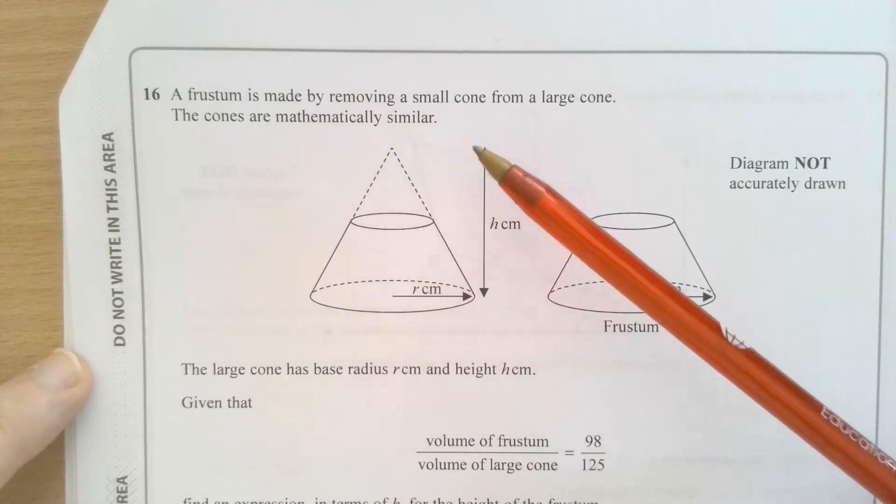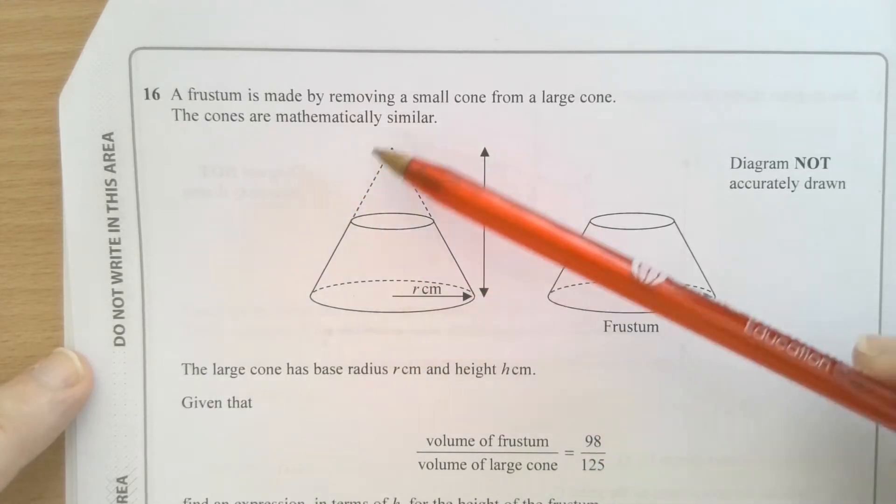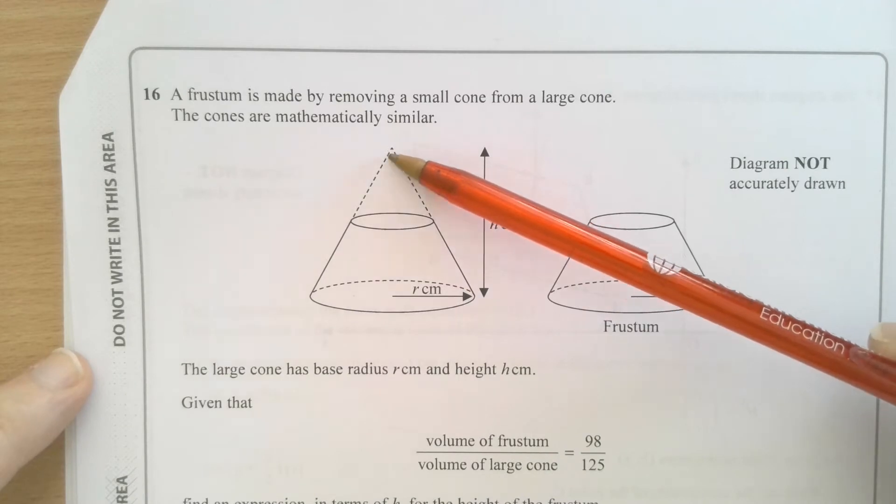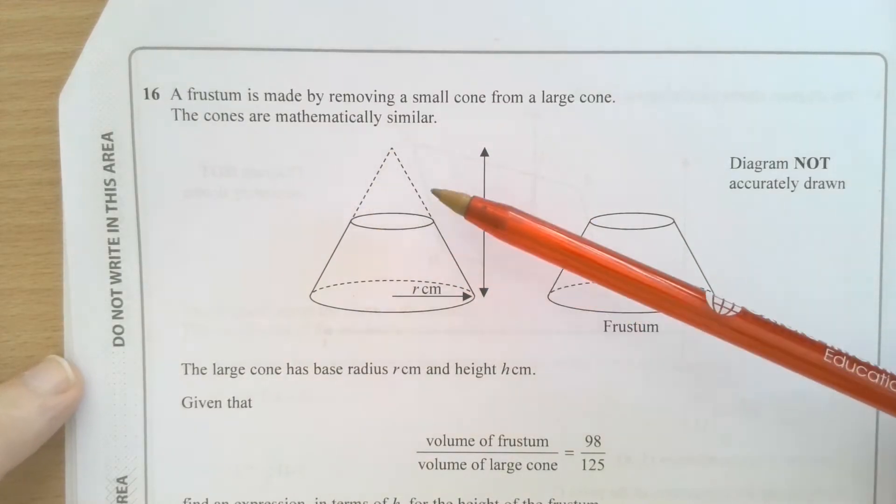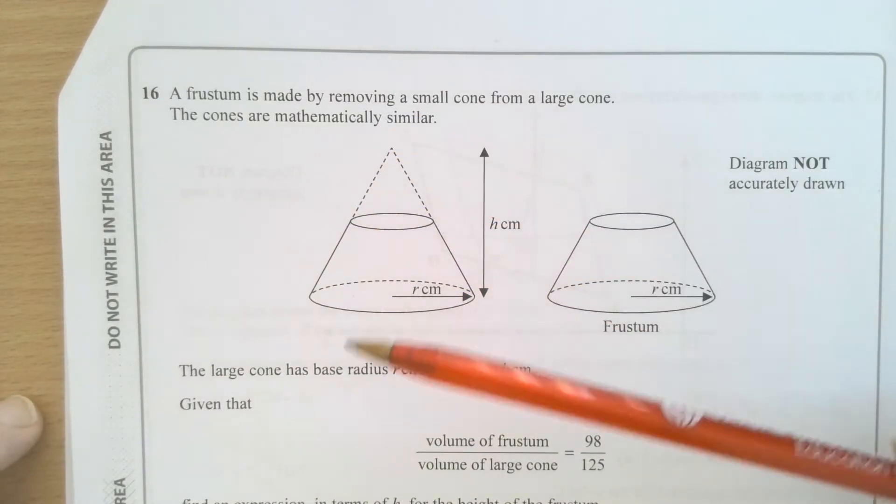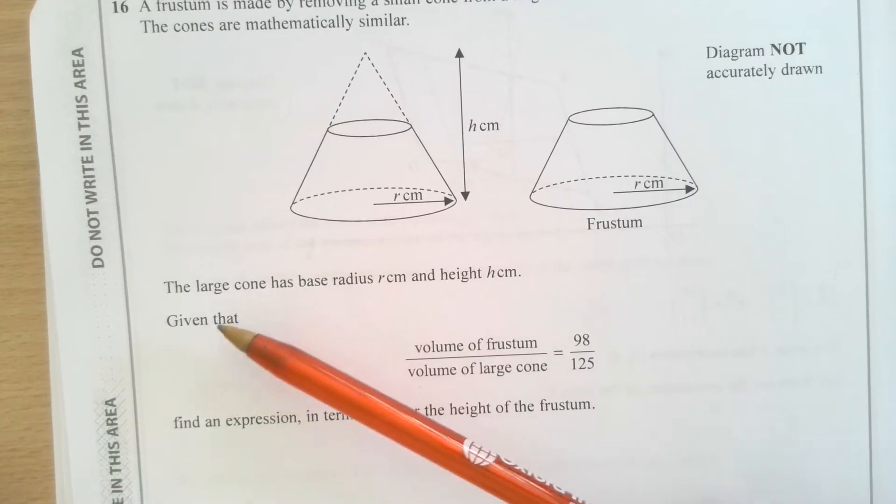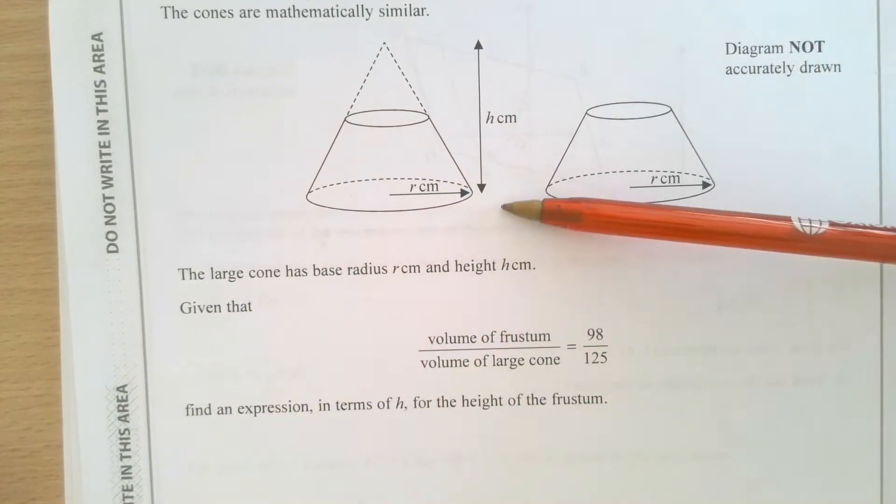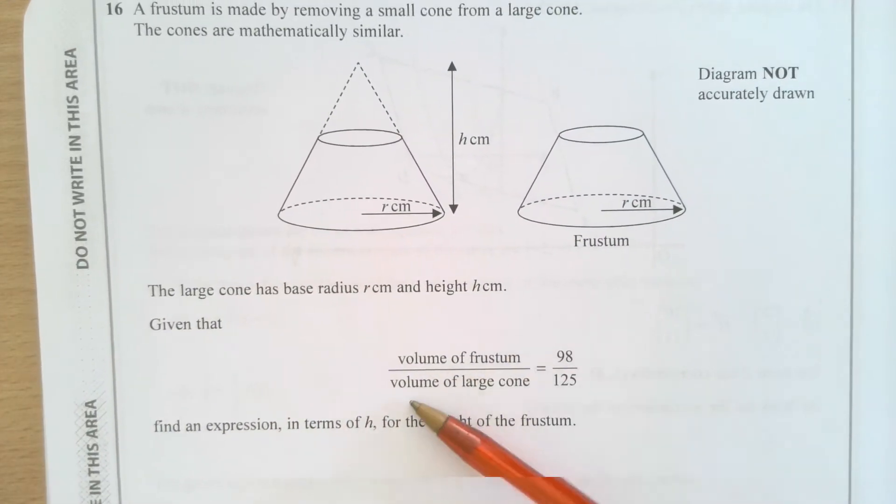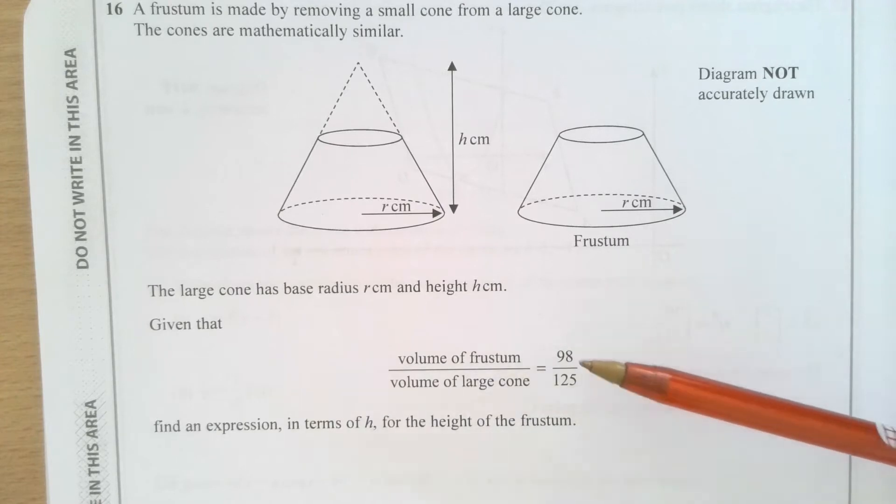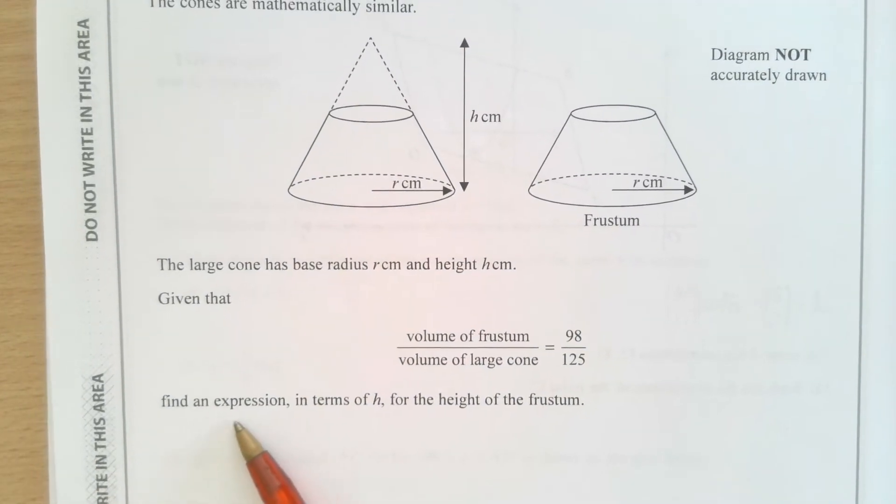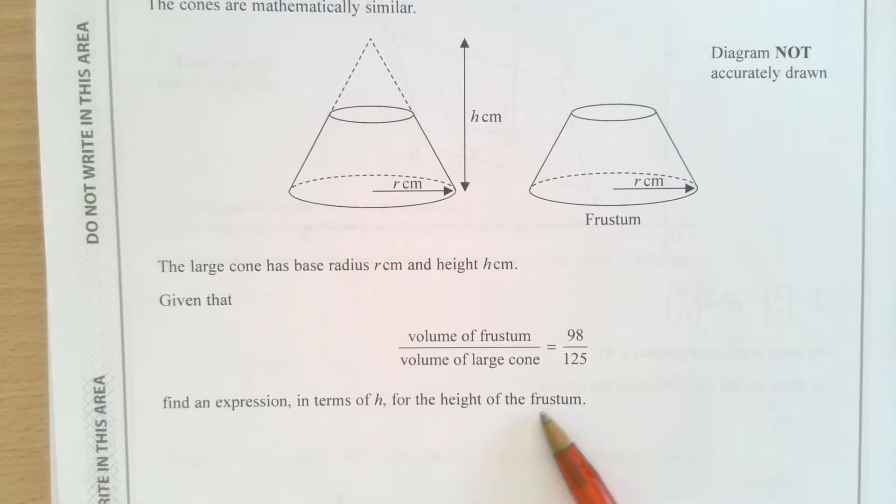The cones are mathematically similar. In other words, this larger one is an enlargement of what this smaller one's volume would have been. The volumes are linked by a scale factor of volume. The large cone has base radius r and height h. Given that the volume of the frustum divided by the volume of large cone is related by the fraction 98 over 125, find an expression in terms of h for the height of the frustum.